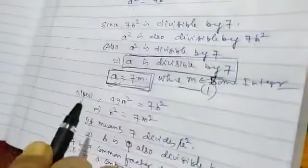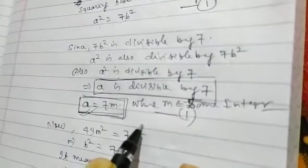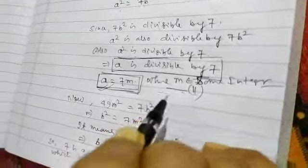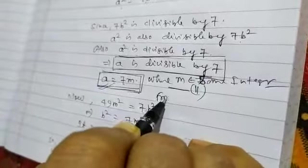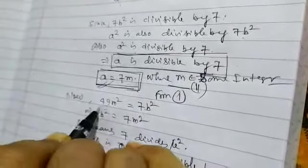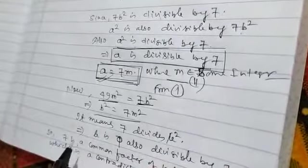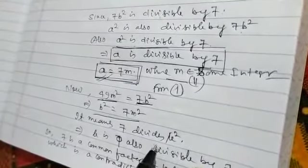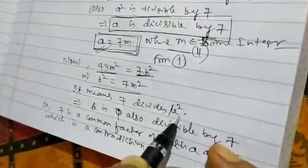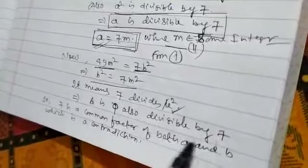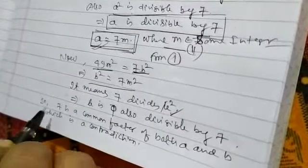Now, here in the question, suppose this is equation first. In first, it is given that A square is equal to 7 B square, from first. So 49 M square is equal to 7 B square. So B square is equal to 7 M square. It means 7 divides B square. So B is also divisible by 7.